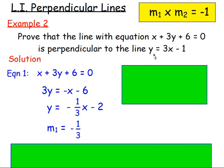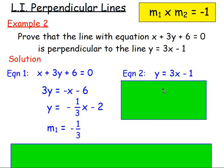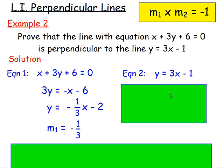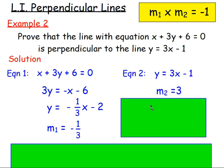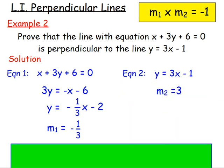Equation two: y equals 3x minus 1. That's already written in the form y equals mx plus c, so I don't have to do anything. The gradient m is just 3, the coefficient of x. So that's both gradients found.